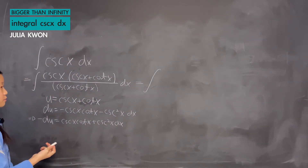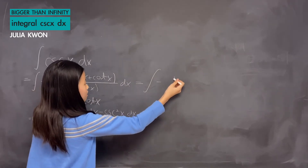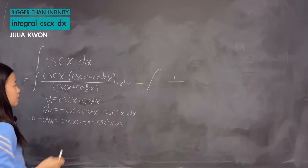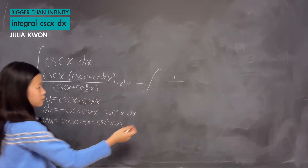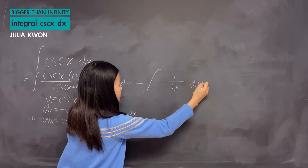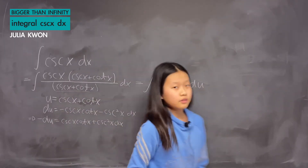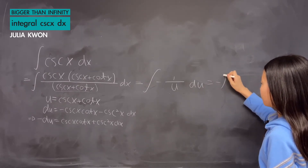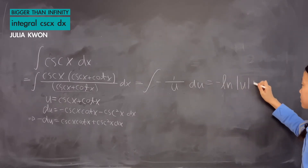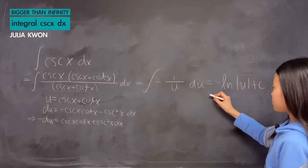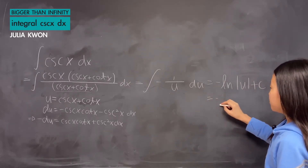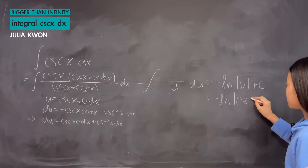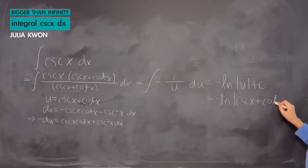We replace what we have in the denominator and dx with negative du. The negative goes to the front, and we have 1 over u, since we substituted u for cosecant x plus cotangent x. Taking the integral of negative 1 over u gives us negative ln of the absolute value of u plus C. Substituting u back, we get negative ln absolute value of cosecant x plus cotangent x plus C.